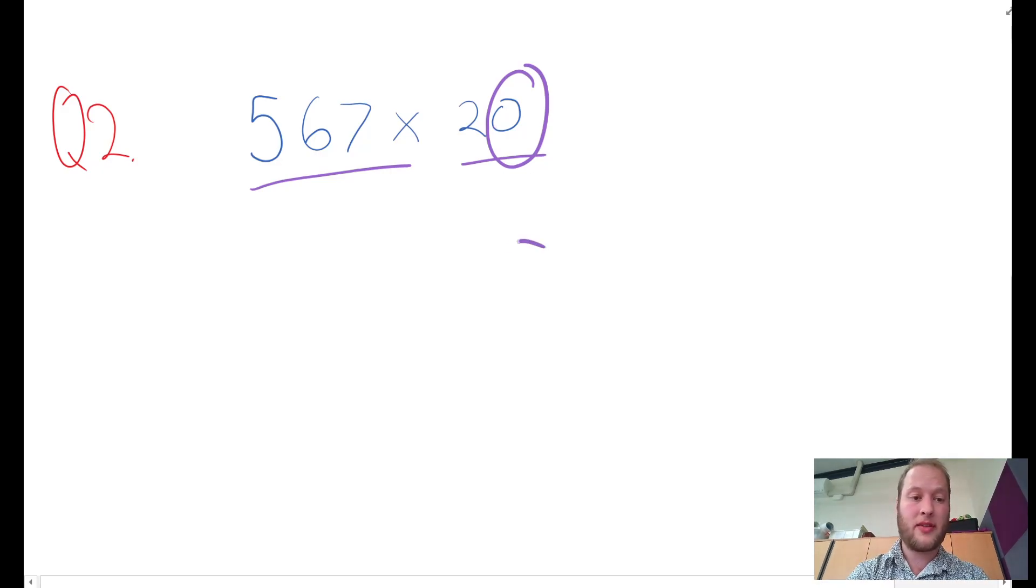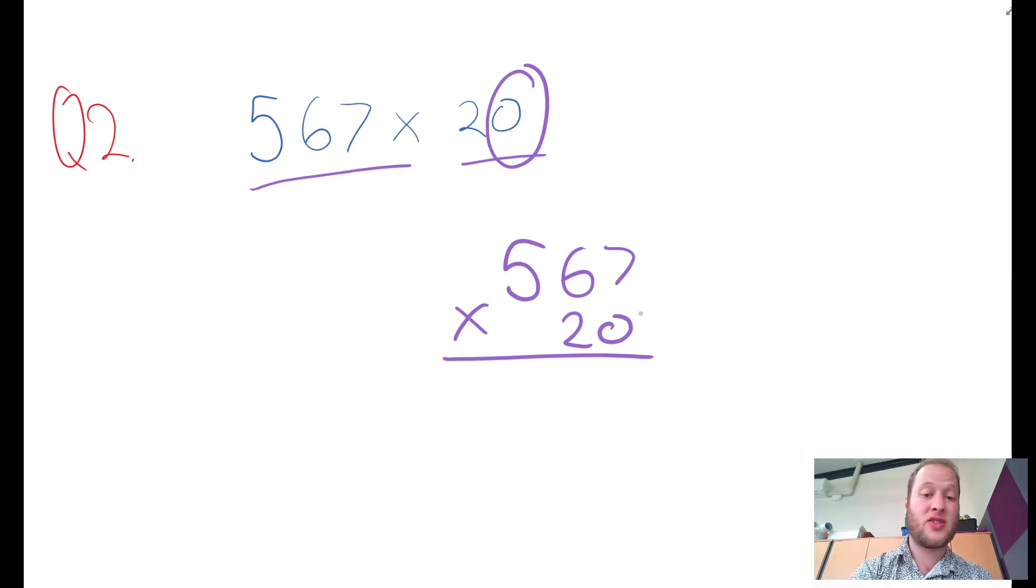One strategy is doing it vertically: 567 times 20. One method is let's just forget about the zero and just do times by 2, and then we can just tack on the zero at the end. I couldn't do that if it's not a zero—if it was 21, I couldn't just cross off the one.